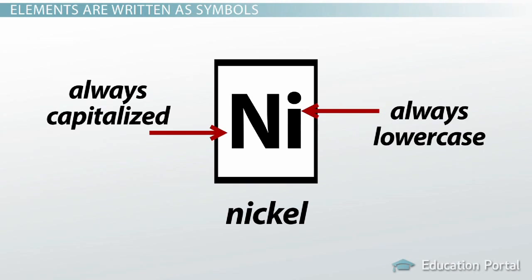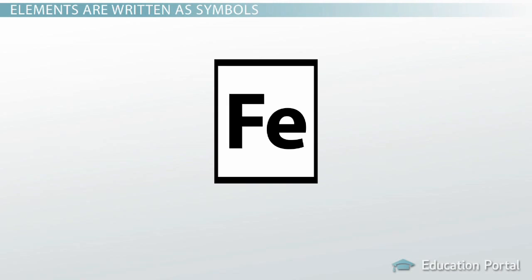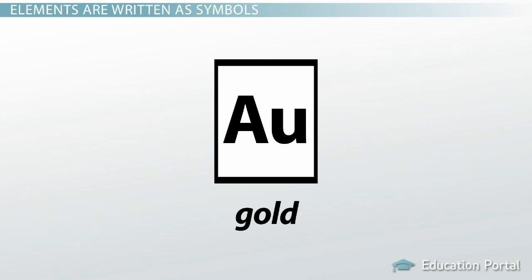Symbol names do not always match the letters in the elemental name. For example, FE is the symbol for iron, and AU is the symbol for gold. These symbol names are derived from the Latin names for those elements.